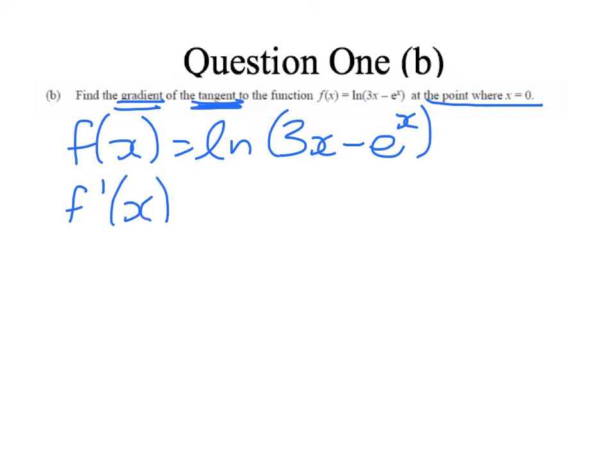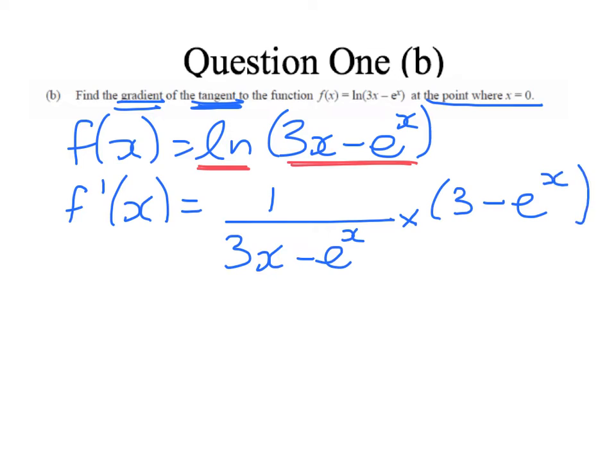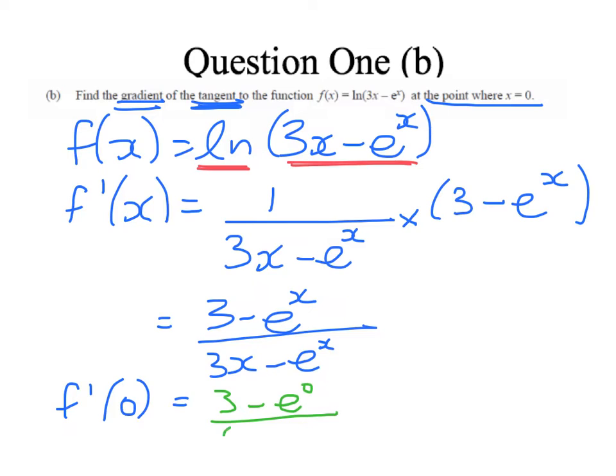So we start by finding the first derivative. The derivative of the natural log is 1 over, so it's going to be 1 over 3x minus e to the x times the derivative of the inner function, which is 3 minus e to the x. So writing that nicely, I get 3 minus e to the x over 3x minus e to the x. Now we want to evaluate that when x equals 0. So we get 3 minus 1 over negative 1, which equals negative 2. Also an achieved question.